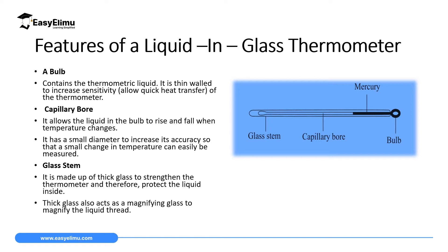A liquid-in-glass thermometer has specific features. The first feature is a bulb. As you can see on the screen, the bulb contains the thermometric liquid. The bulb is very thin — it has a very thin wall to increase sensitivity. The reason we have a thin bulb is to allow quick heat transfer from the body whose temperature you are measuring to the thermometric liquid inside.